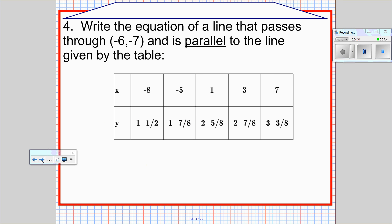And here we are in the home stretch. Write the equation of a line that passes through negative 6, negative 7, and is parallel to the line given by the table. So I've got a linear table here. It has fractions in it, but don't worry, because fractions are our friends.